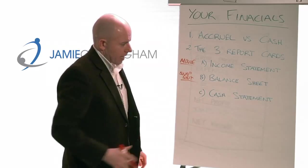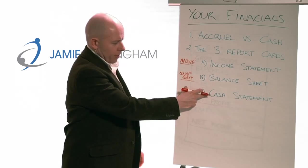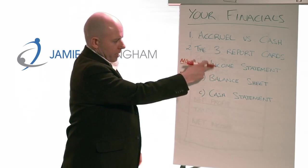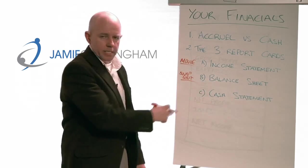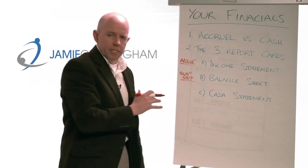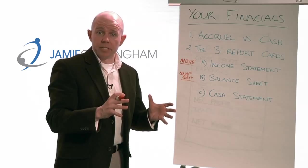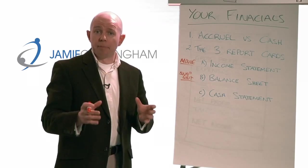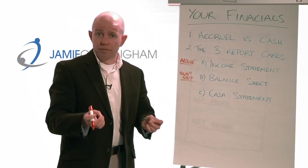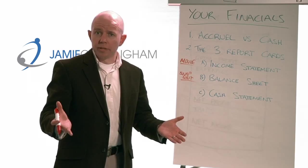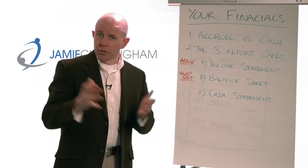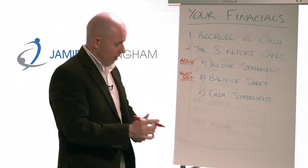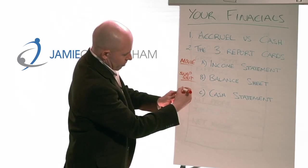The last one is the cash statement, and that sort of puts the link between the other two. The income statement says in theory this is what happened in your business. The cash statement says this is actually what happened from a cash point of view. Again, this one's like a movie — it's got a start and a finish and you choose the time period you want to report over.